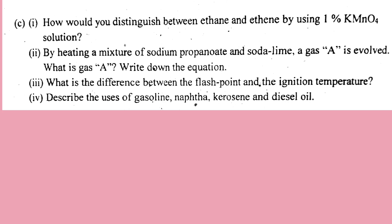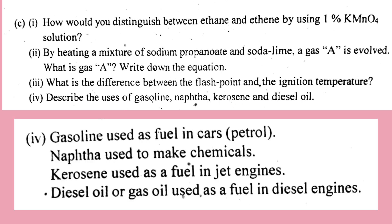Number four: describe the uses of gasoline, naphtha, kerosene, and diesel oil. Gasoline is used as fuel in cars (petrol). Naphtha is used to make chemicals. Kerosene is used as fuel in jet engines. Diesel oil or gas oil is used as fuel in diesel engines.